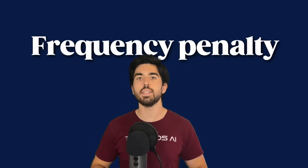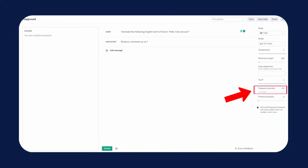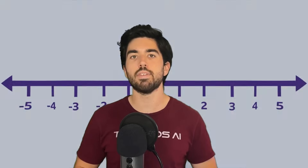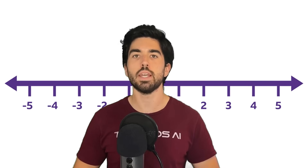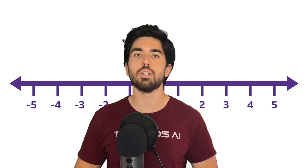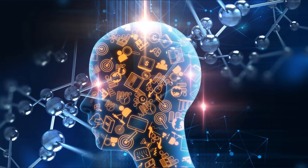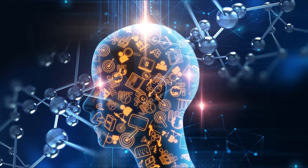Another parameter to consider is the frequency penalty. By increasing its value, you can deter the model from repeating tokens that have already been used frequently in the generated text. A positive value discourages the model from being repetitive, whereas a negative value may encourage it to repeat the same words or ideas. Lastly, you have the presence penalty, which is similar and will discourage the model from repeating any token that has already appeared in the generated text. This is a bit more strict — not related to multiple repetitions — and will discourage even a single repetition of the same word or token.